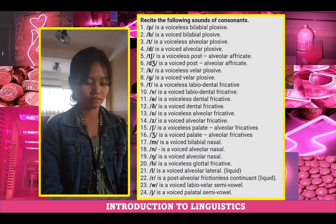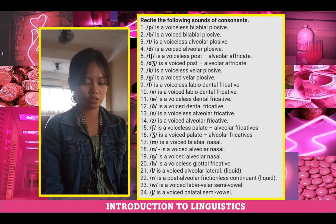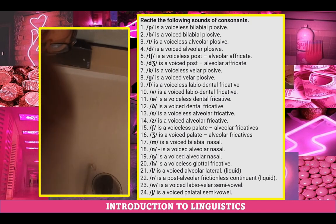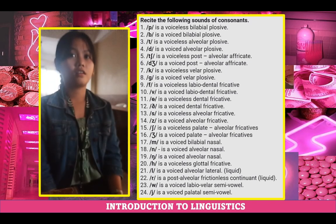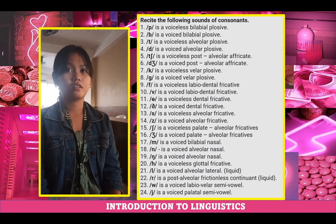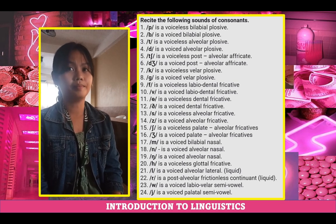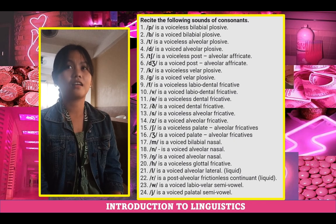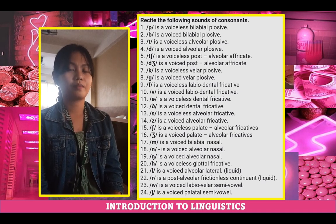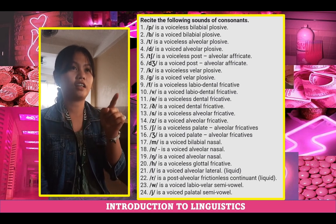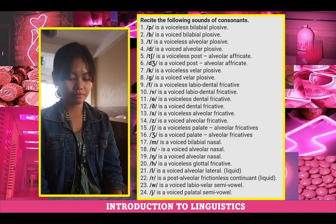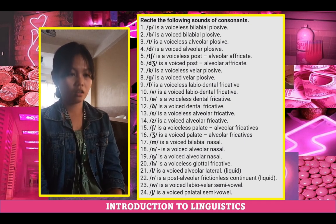Number fifteen: voiceless palato-alveolar fricative. Voiced palato-alveolar fricative. Number nineteen: voiced alveolar nasal. Another for number nineteen — the other voiced alveolar nasal. What's the spelling for the other one? It's at the end, like the 'ng' sound at the end of a word. Correct. Number twenty: voiceless glottal fricative. Correct.